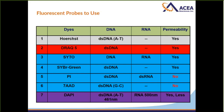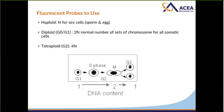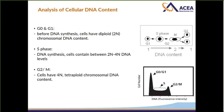Before moving on, we need to define ploidy. Haploid (N) refers to sex cells such as sperm and egg. G0 and G1 phase cells are diploid (2N), having the normal number of chromosome sets. G2 phase cells are tetraploid (4N). So in G0 and G1, before DNA synthesis, cells have diploid 2N chromosomal DNA content. During S phase, cells contain between 2N and 4N amounts of DNA. At G2/M phase, cells have 4N tetraploid chromosomal DNA content.